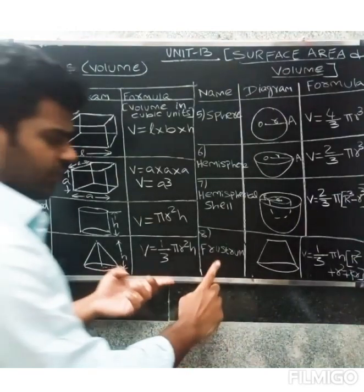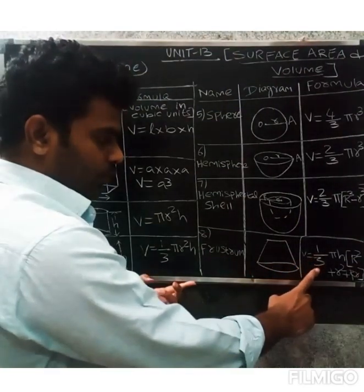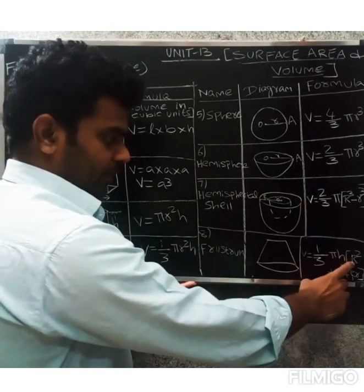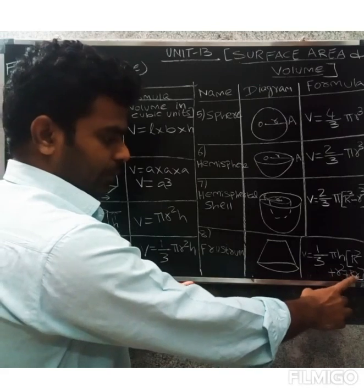Next is frustum. For the frustum shape, the formula is V = 1/3 πh(R² + r² + R×r).